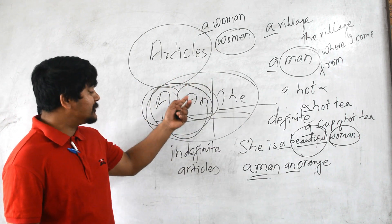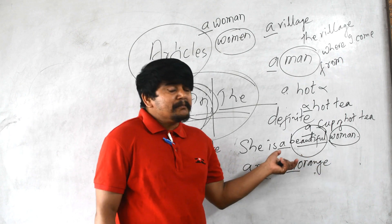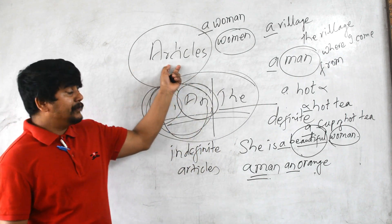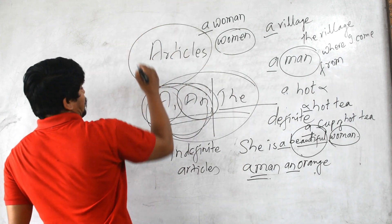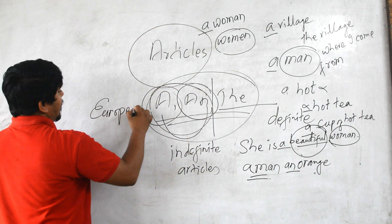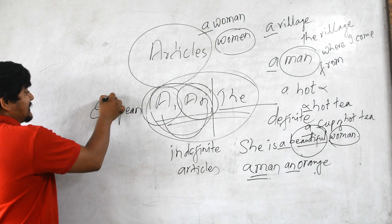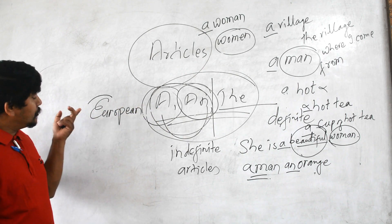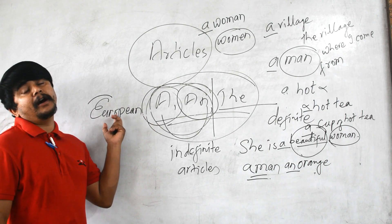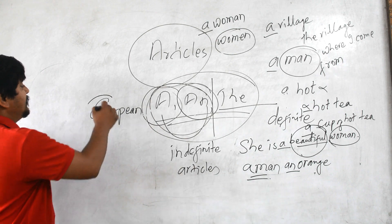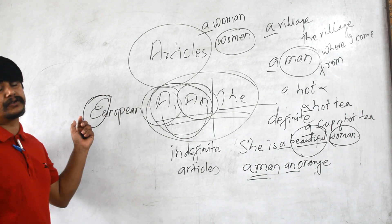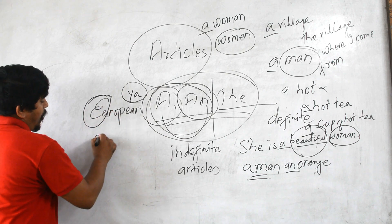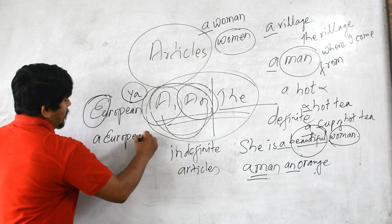Sometimes you may have confusion because you may find the beginning letter is a vowel but the sound is a consonant. For example, 'European' — e, u, r, o, p, e, a, n. Although E is a vowel letter, you must go after the sound, not the letter. The word 'European' begins with a consonant sound — the 'y' sound — so we write 'a European.'